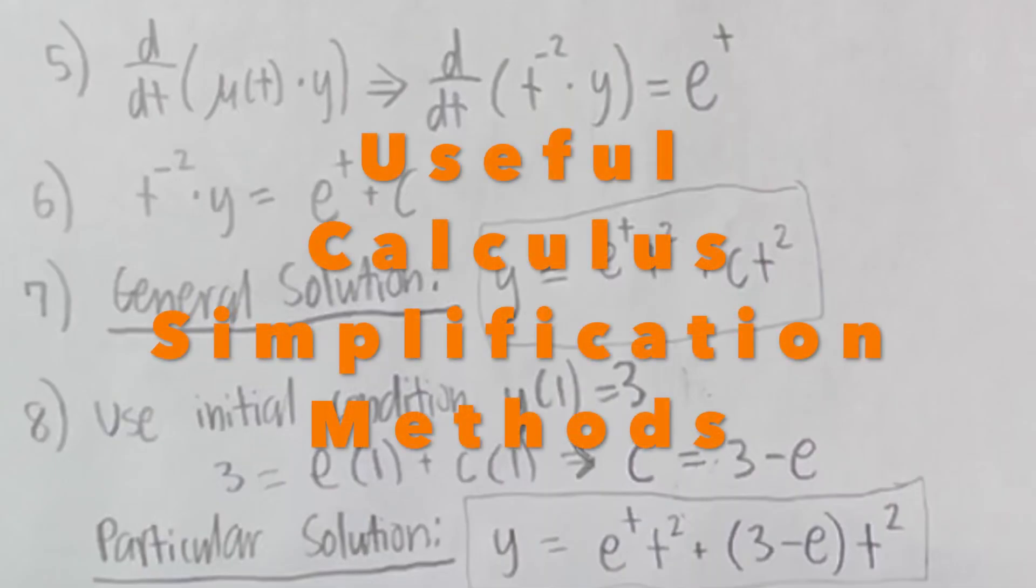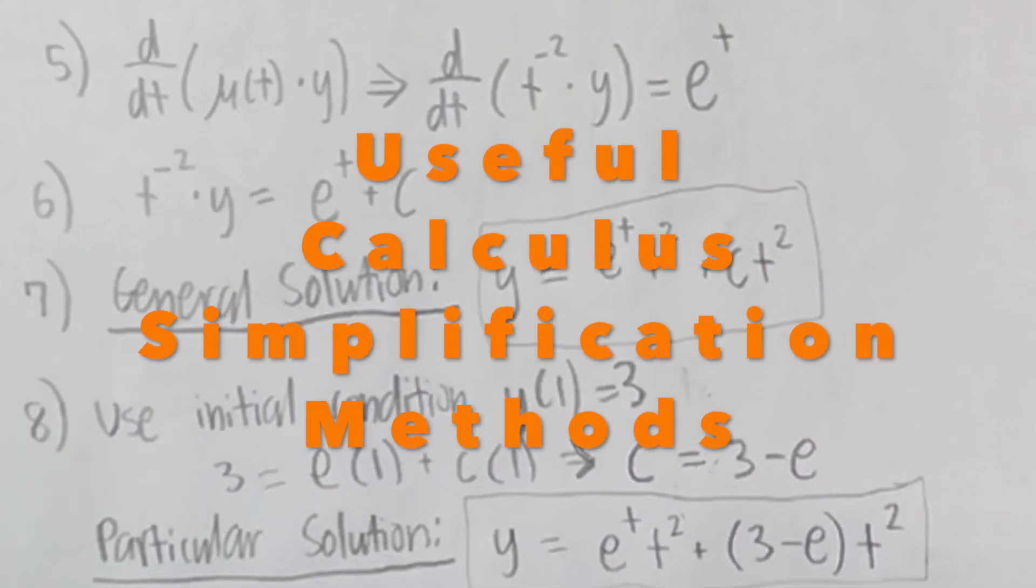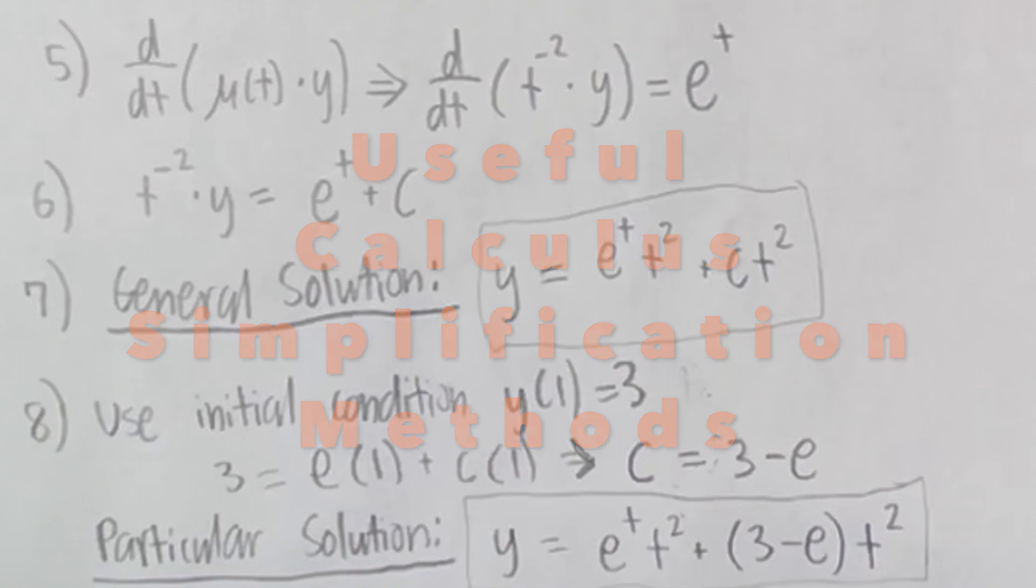There are a few calculus simplification methods that become useful when solving with integrating factors. The first is when you have e^(ln of something), the e and ln cancel each other out, and the term simply becomes what was inside of the ln. When you have a constant in front of an ln term, you can bring that constant to the power of the ln term. After doing so, e and ln cancel out, and the term becomes what's inside of the ln to the power of the constant.